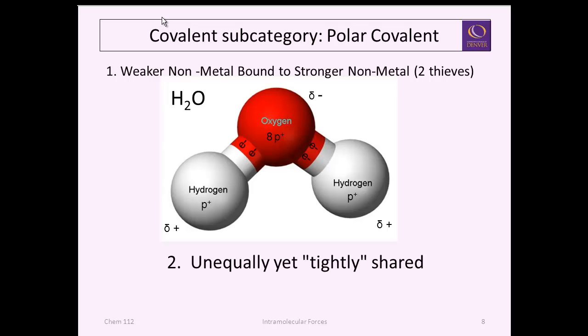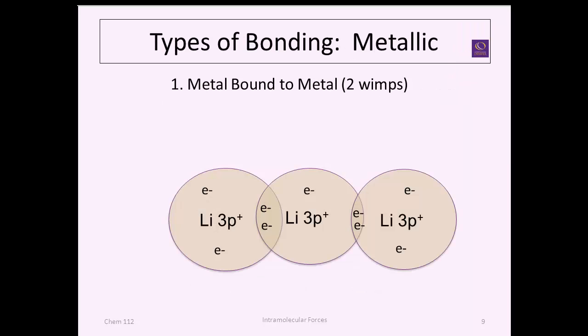Unequally, yet still tightly shared, gives rise to poles or electrical charge on the overall molecule. The strength of water is not really significantly different because of the fact that it's polar. It's still defined by the strength of bonding between hydrogen and oxygen as 459 kilojoules per mole.